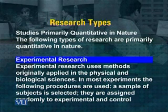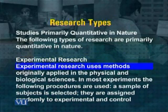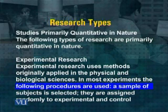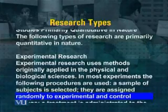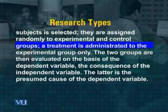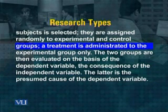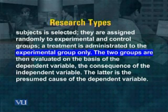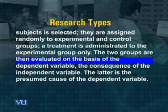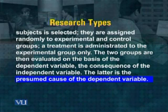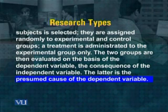Experimental research is one type of research. In experimental research, the researcher uses methods originally applied in the physical or biological sciences. In most experiments, the following procedures are used: a sample of subjects is collected and assigned randomly to experimental and control groups. For example, two groups of people are concerned — one is made subject to an experiment whereas the other is not given any instruction. A treatment is administered to the experimental group only. The two groups are then evaluated on the basis of the dependent variable. In experimental research, we divide people into two groups and then try to determine the causes.